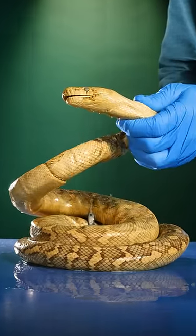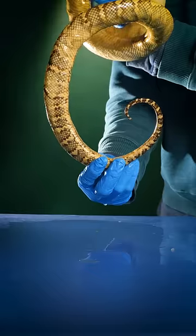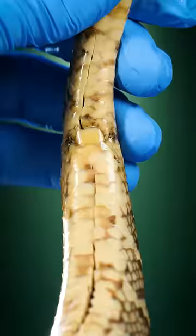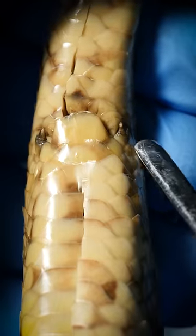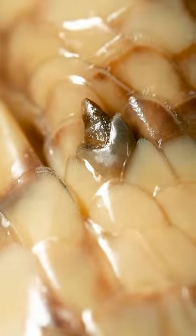So I was checking out this carpet python and I found something crazy. Check out its lower half under its belly. Now look closely - can you see those two little nubs? They're like tiny little spikes. I was wondering what could these possibly be.